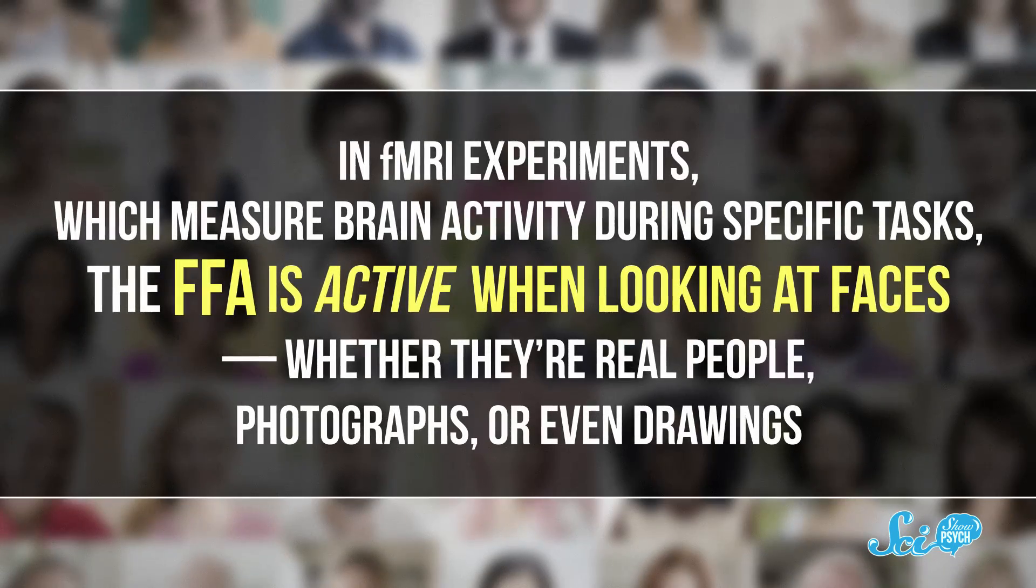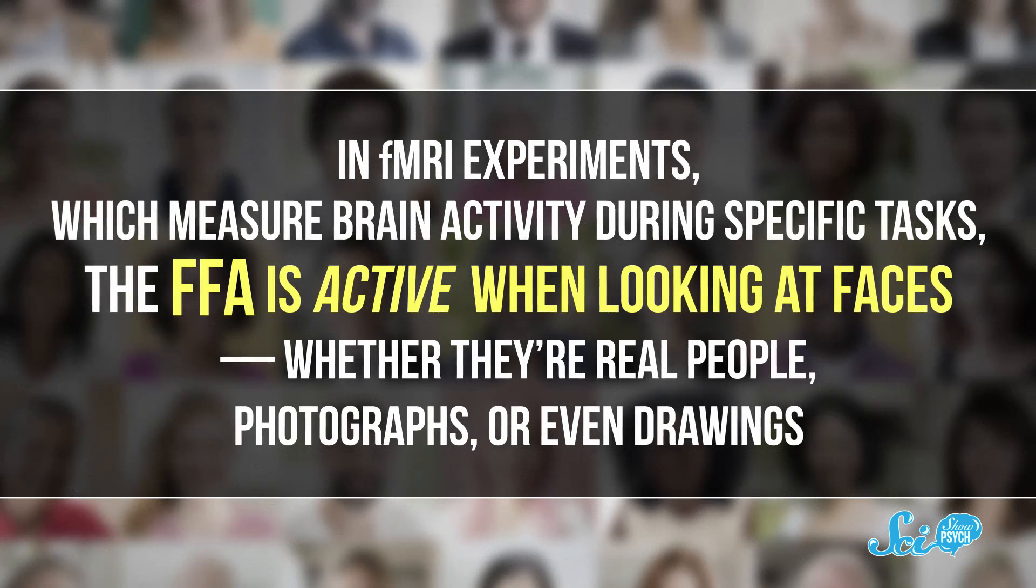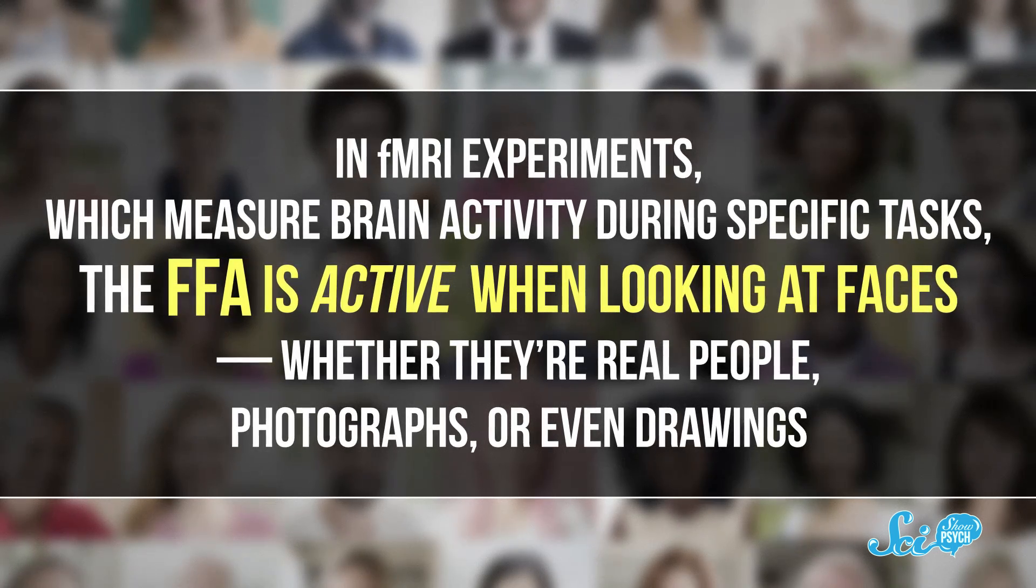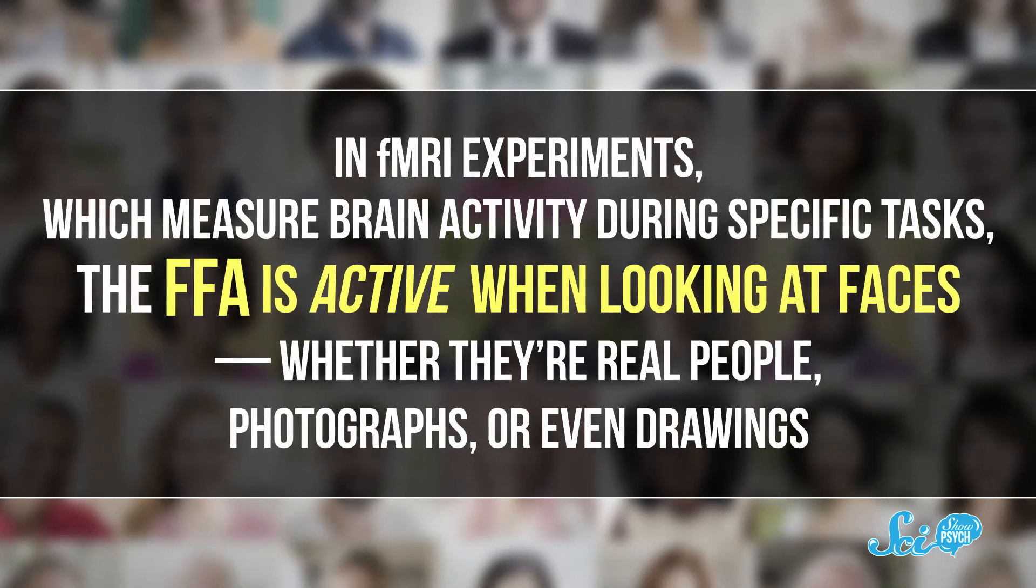We think that the FFA is face-specific because we can observe how the brain responds to faces compared to other objects. In fMRI experiments, which measure brain activity during specific tasks, the FFA is active when looking at faces, whether they're real people, photographs, or even drawings.